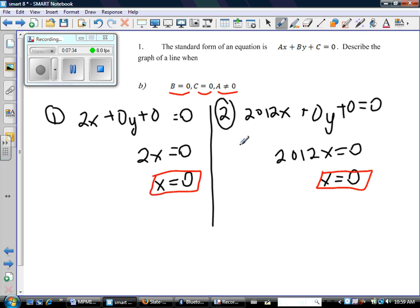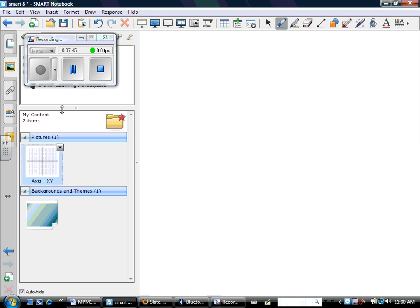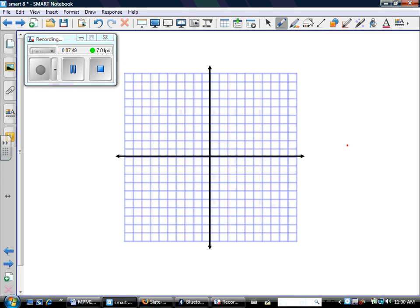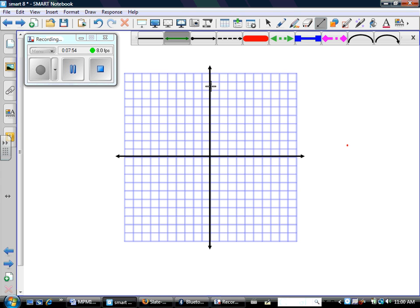And hopefully you can see no matter what number you pick for A, you're going to end up with x = 0. And what is that? Well, we know what that is, right? Let's look at a graph. We know that any line that has an x only does not have a y-intercept, and a line without a y-intercept must be a vertical line.